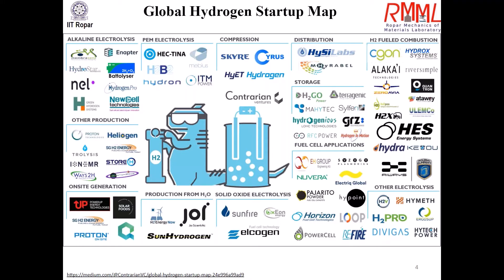To enthuse students about hydrogen, I am presenting the global hydrogen startup map. A lot of startups are coming up in this area — there are electrolyzers that can generate hydrogen, compression systems for high-pressure storage, distribution networks, hydrogen IC engines, storage solutions, fuel cell applications, and on-site hydrogen production from water. There are plenty of startups working in this area, and it is my personal dream that we see more startups emerging here in India as well.